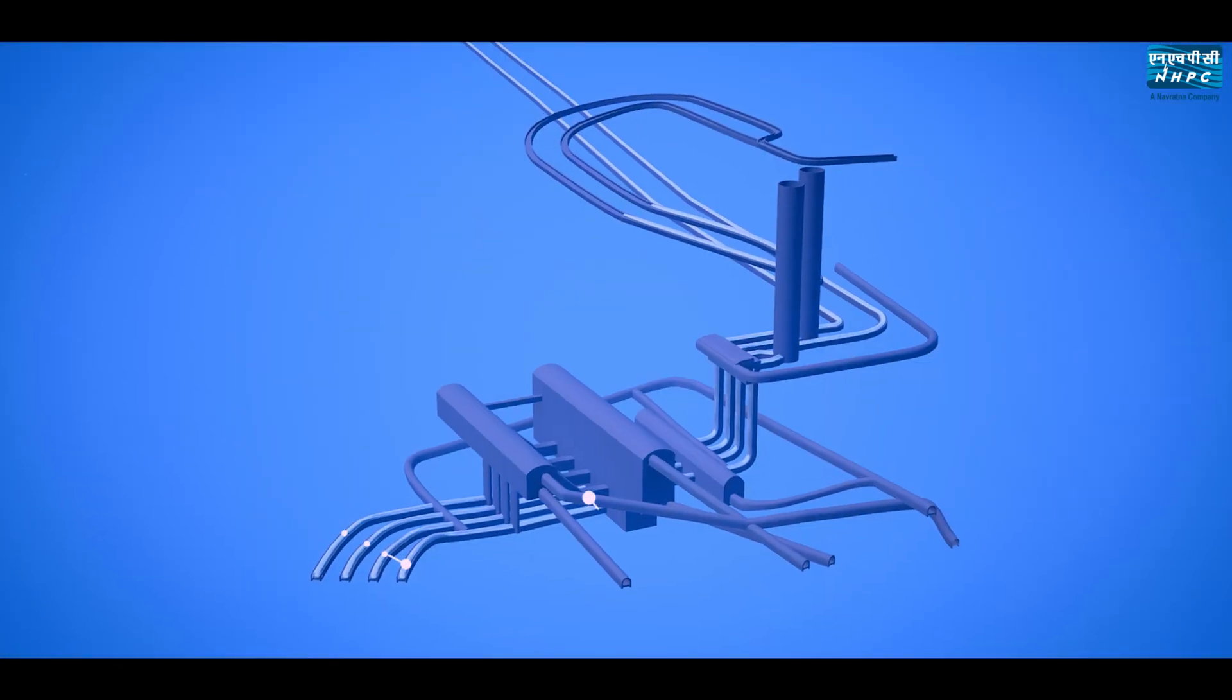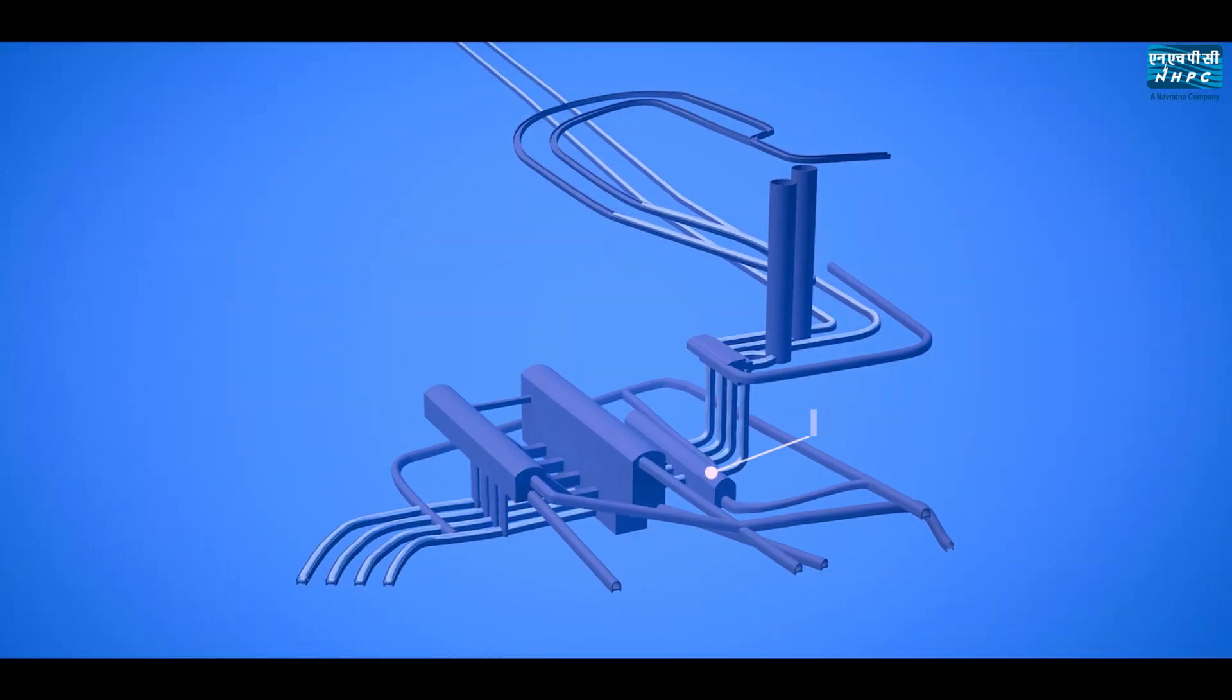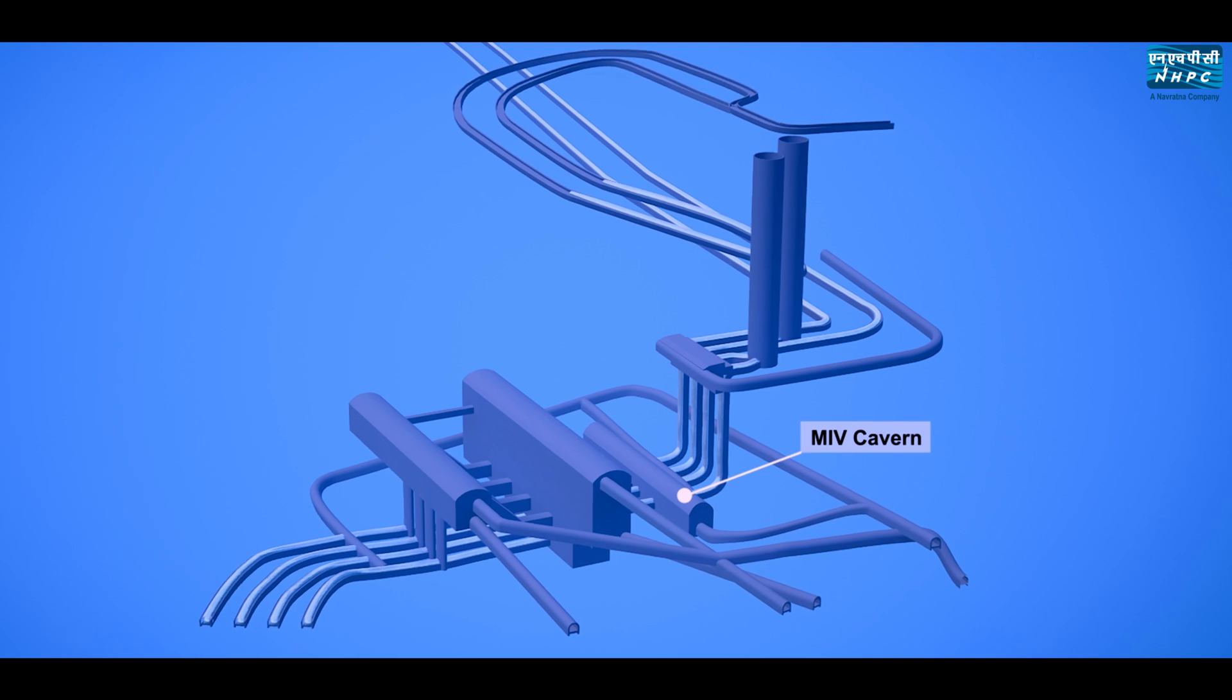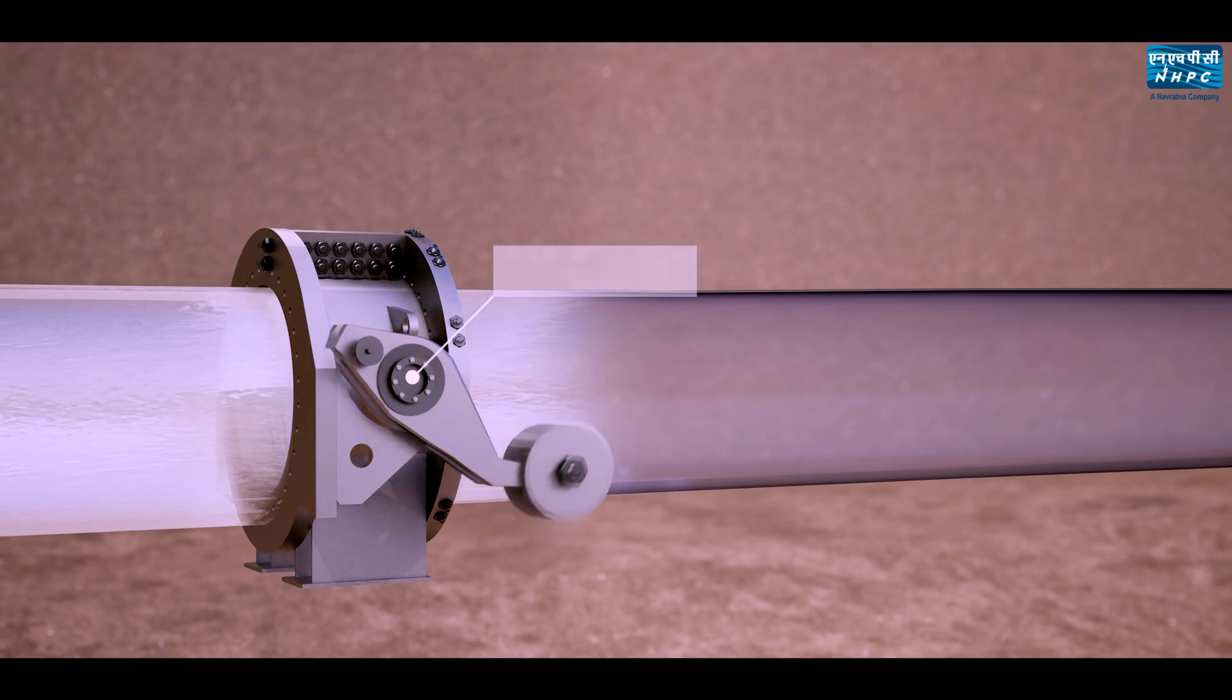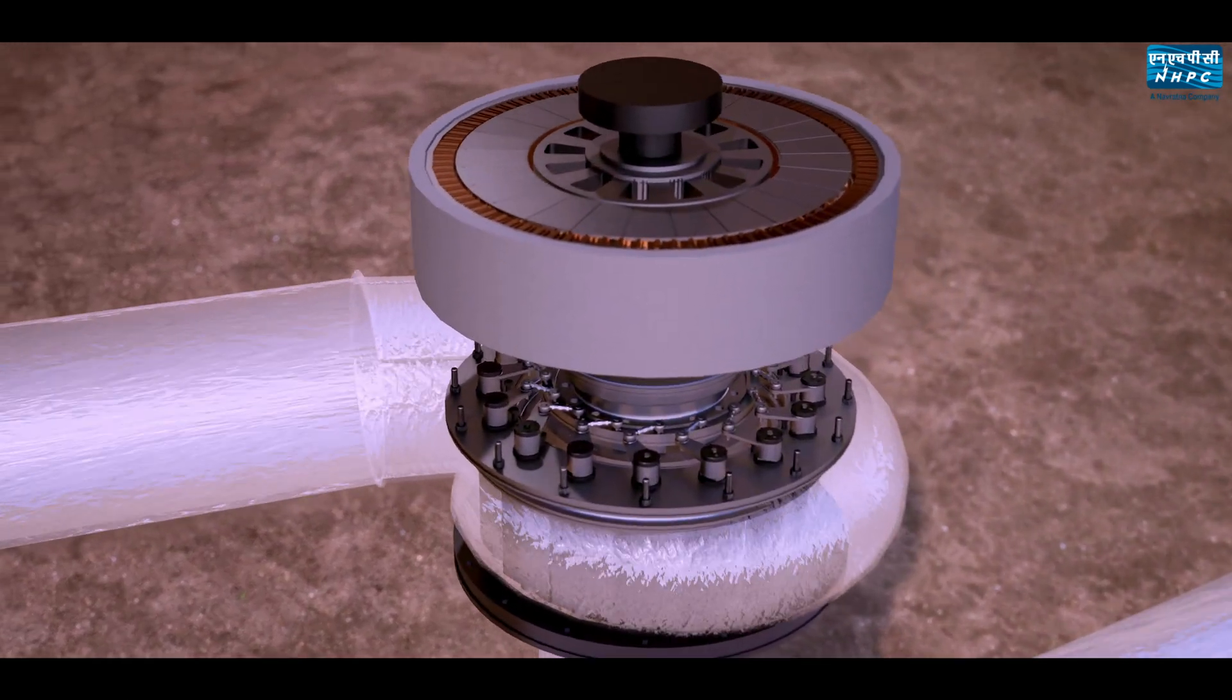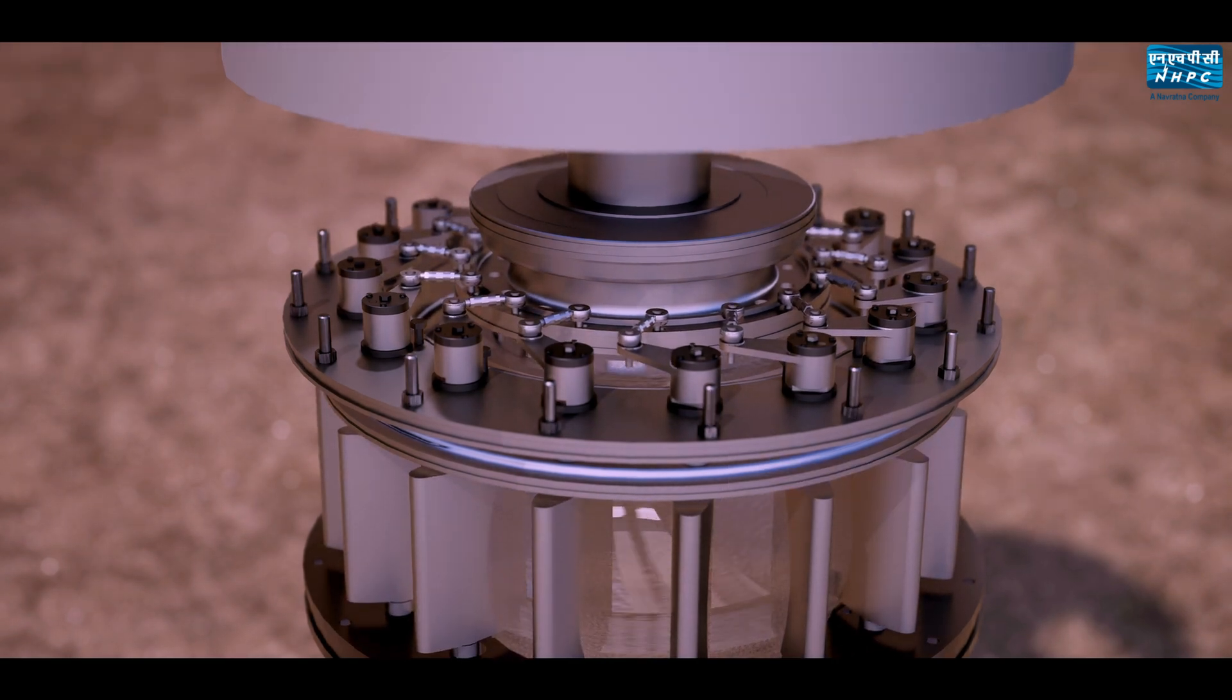Tail race tunnels, main access and ventilation, kibble tunnels, and a surface pothead yard. To isolate the machine from the water conductor system, MIV has been provided in the upstream just adjacent to the machine hall. When the main inlet valve opens, water in the penstock starts to flow through spiral case, stay vanes, guide vanes, and the Francis type runner.